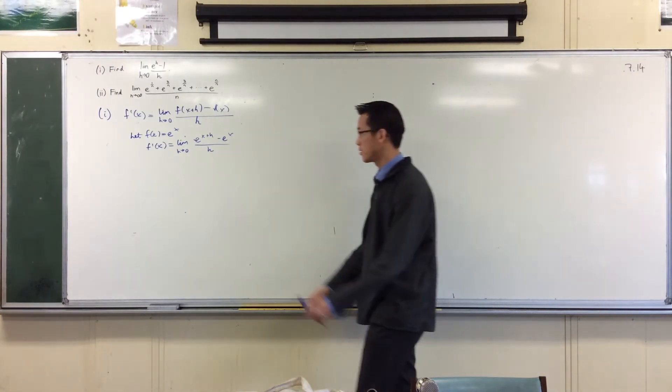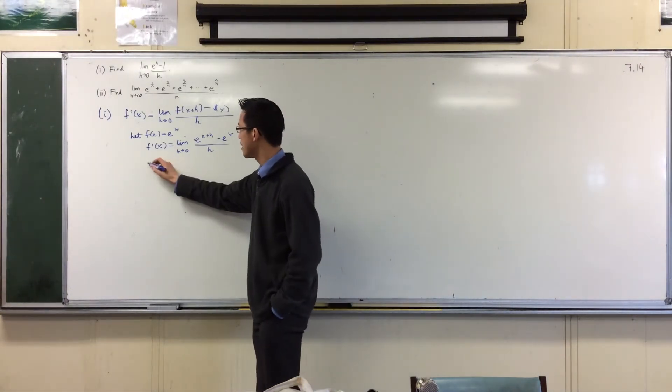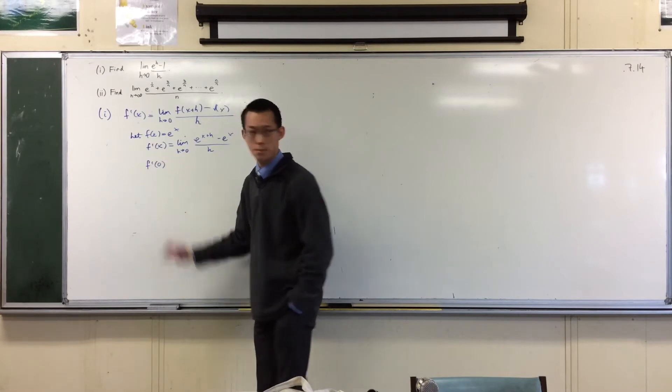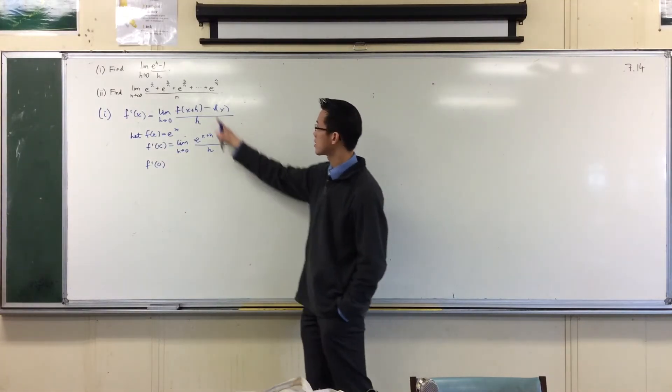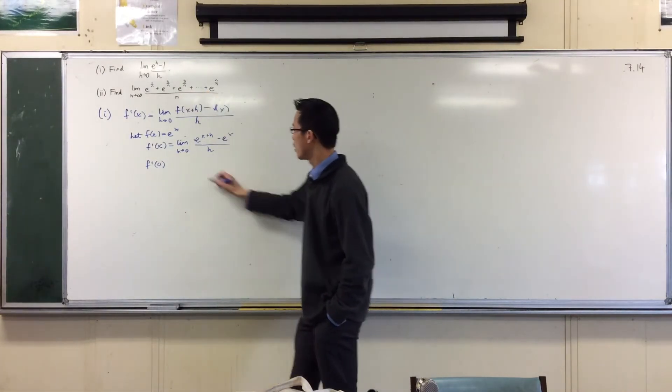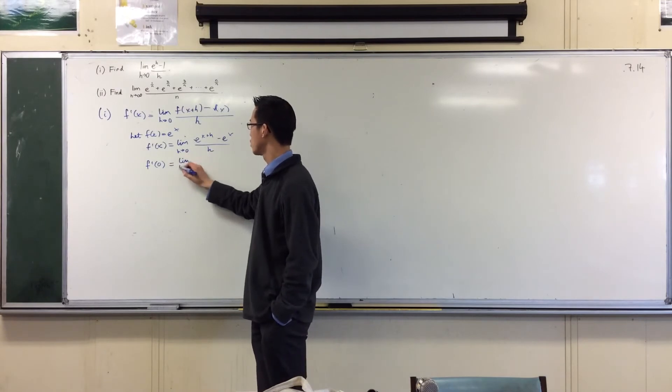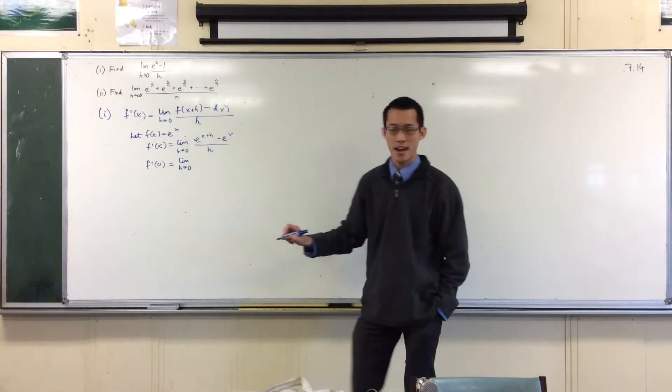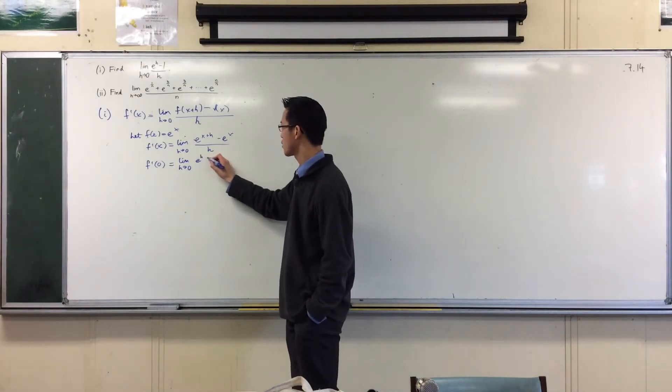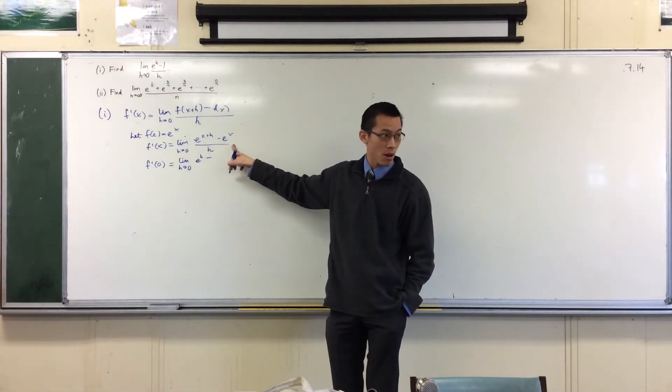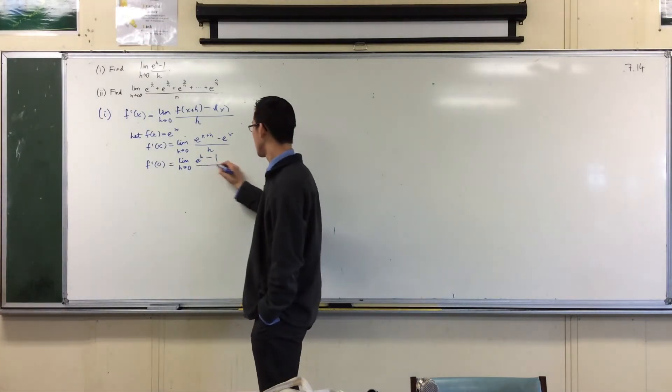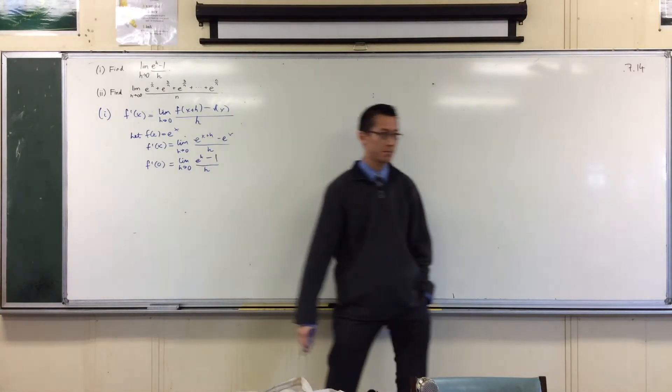So instead we're going to appeal to this. We want to say, how about this particular value? You put in zero. This is going to get us up to here. So at x equals zero, this is going to be e to the h, this will be e to the zero, which is one. So you get to this.